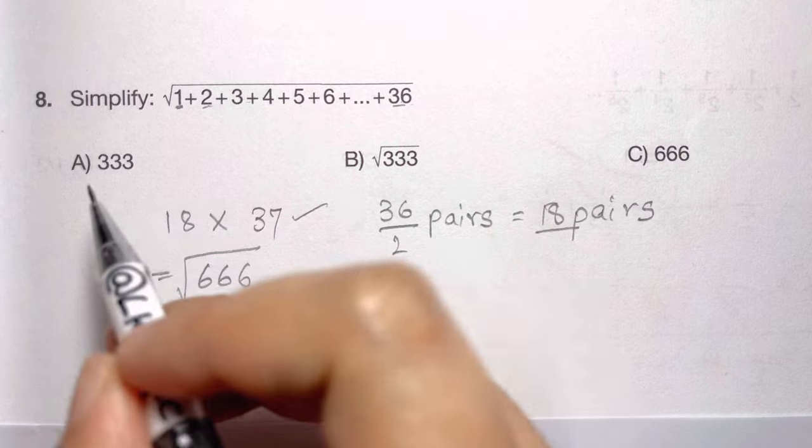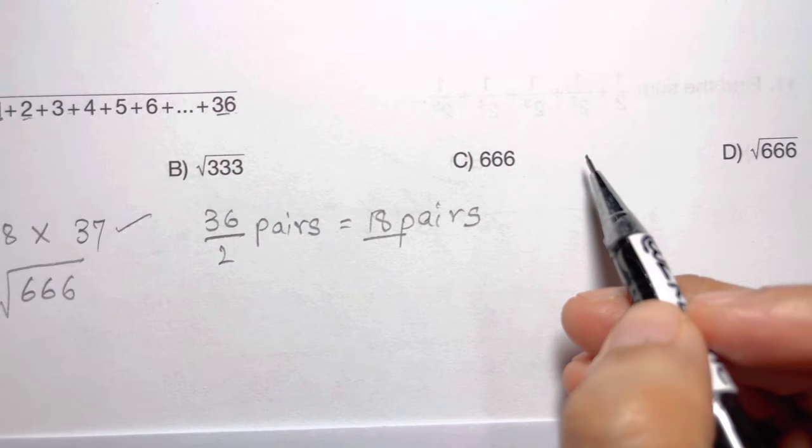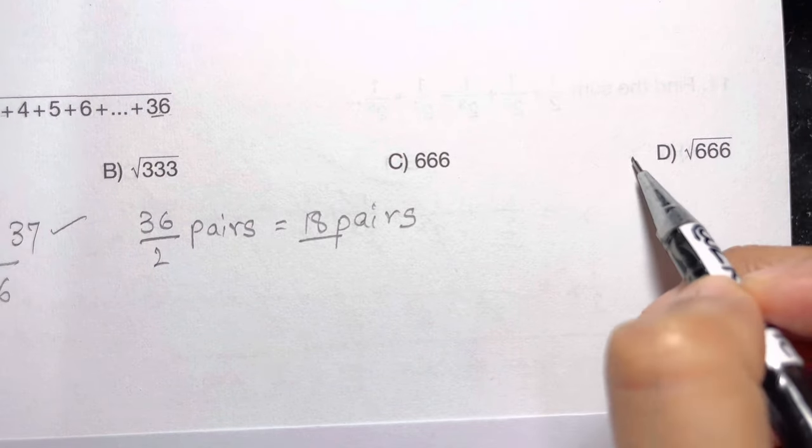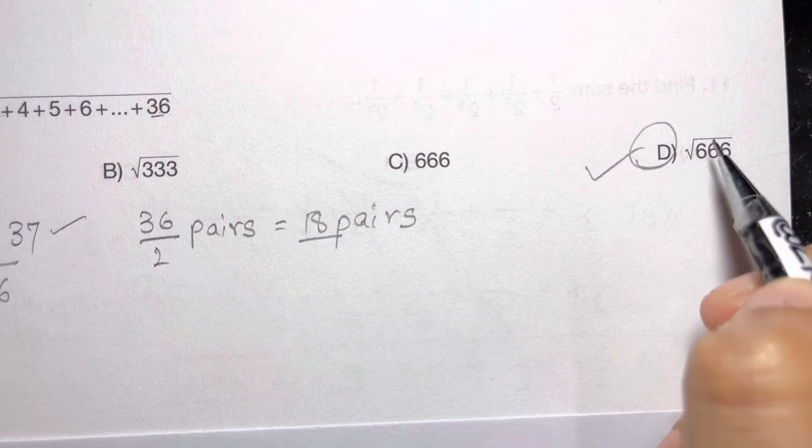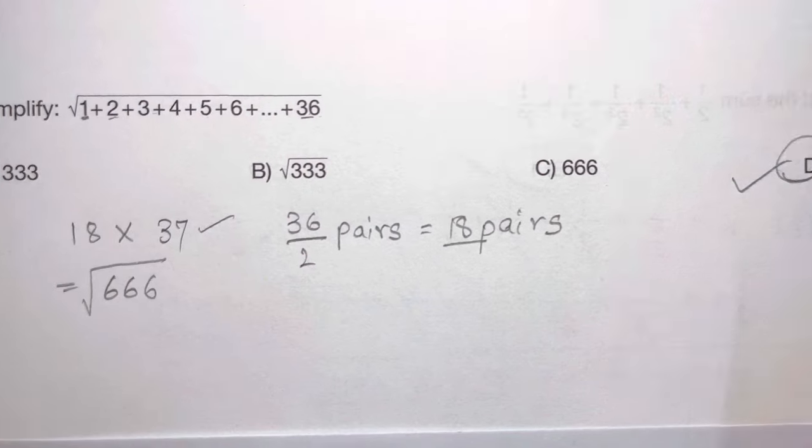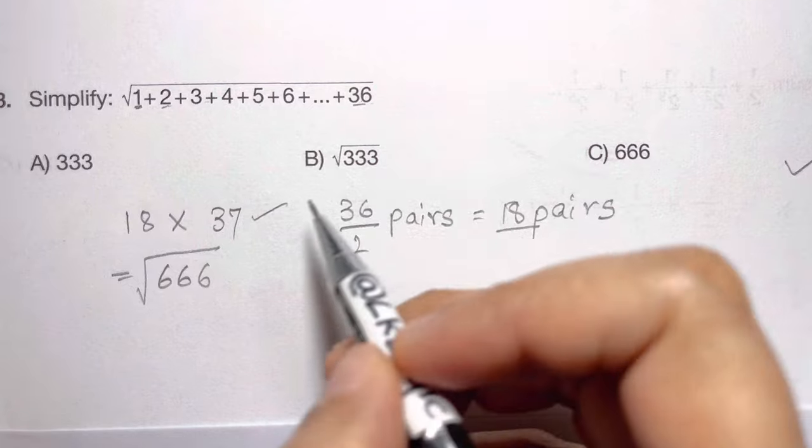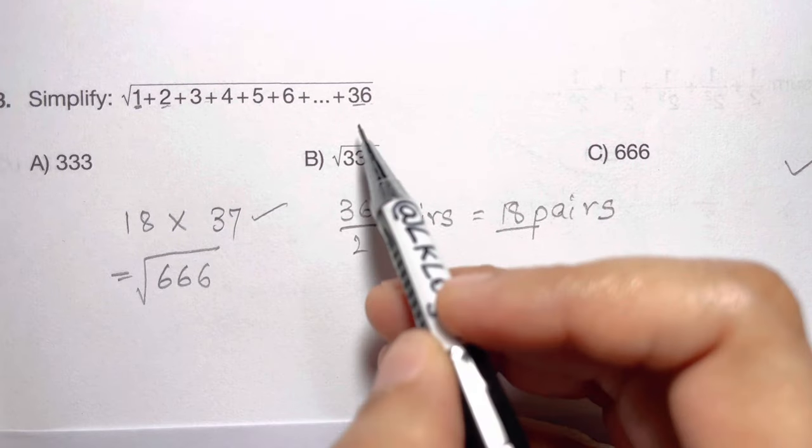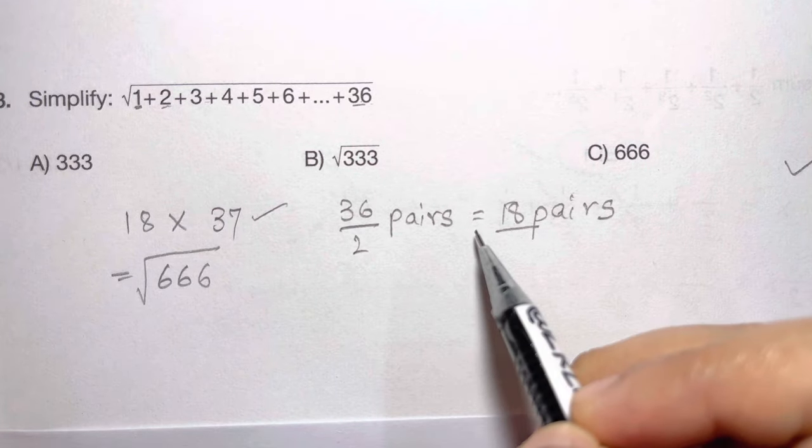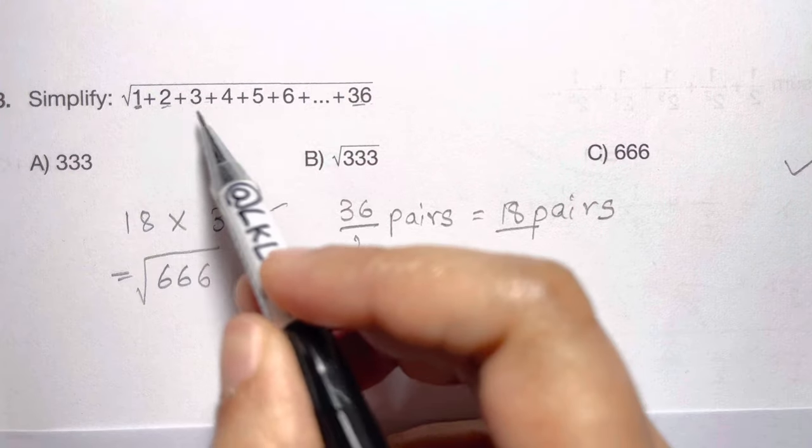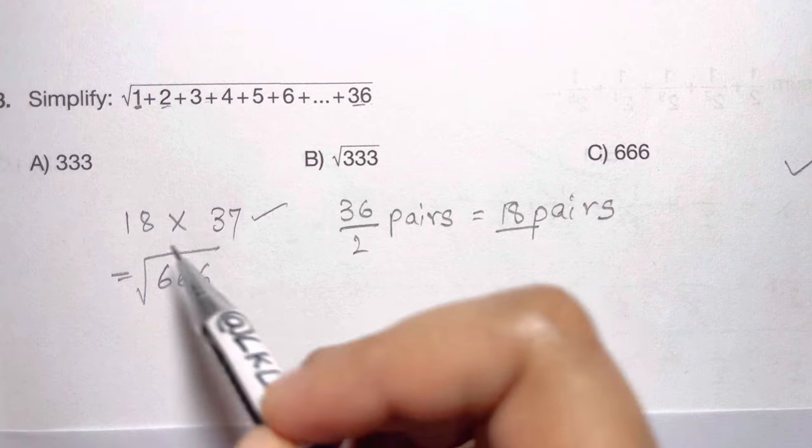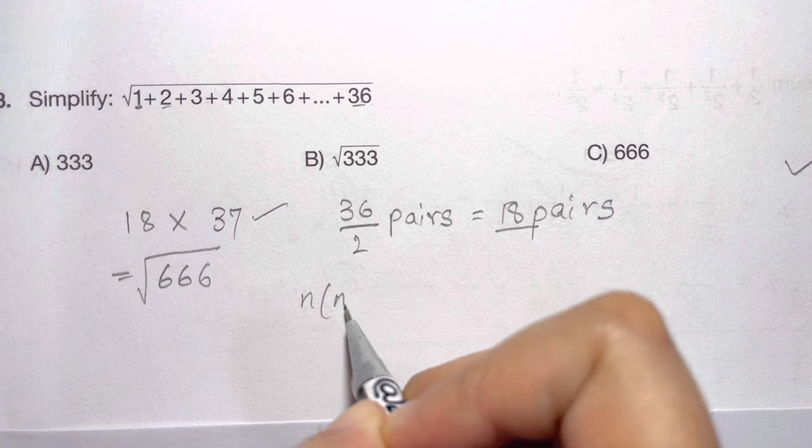So if you want to remember this, you have to remember how many pairs are there - divide by 2 and you get the pairs. And what is the solution for this? Multiply that - that is n into n plus 1 by 2. Total number 36, 36 plus 1 is 37, divided by 2 - that's your answer.